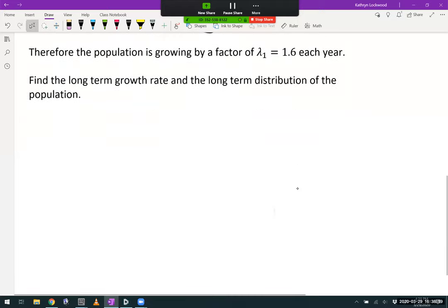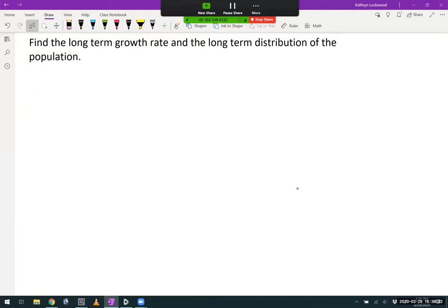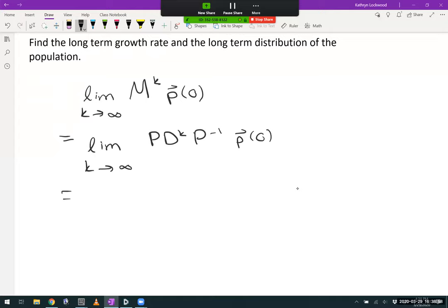Now, let's find the long-term growth rate for the same population and its long-term distribution of the population. This is the part where we'll use the diagonalization. We want to find the limit as k tends to infinity of M to the k times some initial vector of our population. Using the diagonalization, this is equal to the limit as k tends to infinity of P D to the k P inverse times p of 0.